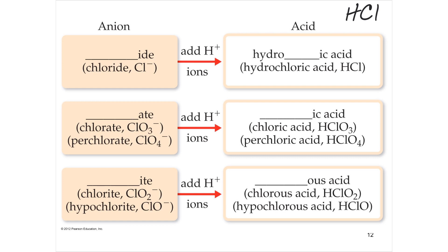When the anion has an -ate ending, the acid gets an -ic ending: chlorate becomes chloric acid (HClO₃). Perchlorate becomes perchloric acid. When the anion has an -ite ending, the acid gets an -ous ending: chlorite becomes chlorous acid (HClO₂), and hypochlorite becomes hypochlorous acid (HClO).